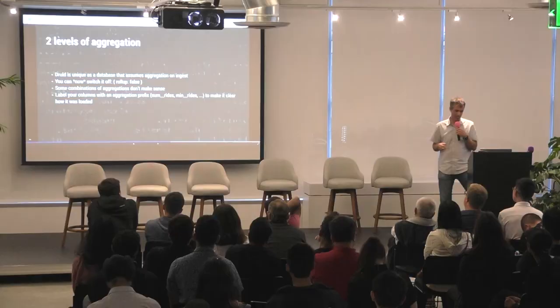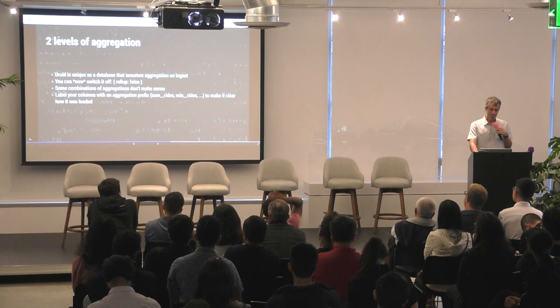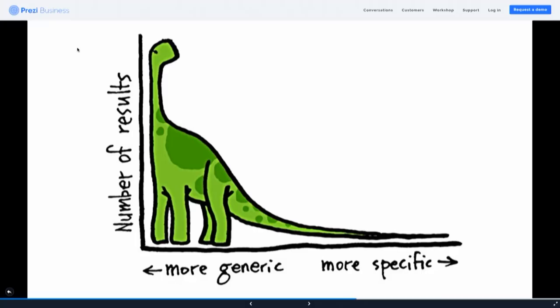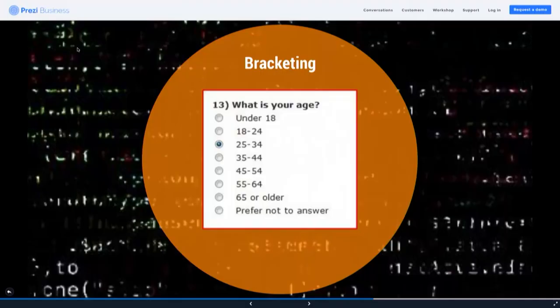In our aggregation framework we label the aggregate functions used in the column name — if we do a sum on ingest we label it something like 'sum_rides' or 'min_rides' to make it clear how the data was loaded. Chopping up the long tail: if you have 250 countries and only a small portion contributes to most of your data, you can keep detail on those and chop off the long tail — dynamically or in a fixed way. Be careful about flickering if you do dynamic long-tail chopping.